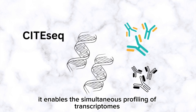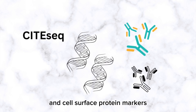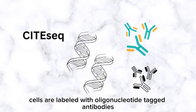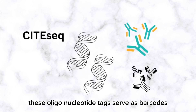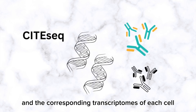It enables the simultaneous profiling of transcriptomes like gene expression and the cell surface protein markers in individual cells. In CITE-seq, cells are labeled with oligonucleotide tag antibodies specific to cell surface proteins. These oligonucleotide tags serve as barcodes, allowing the identification of both the protein markers and the corresponding transcriptome of each cell.